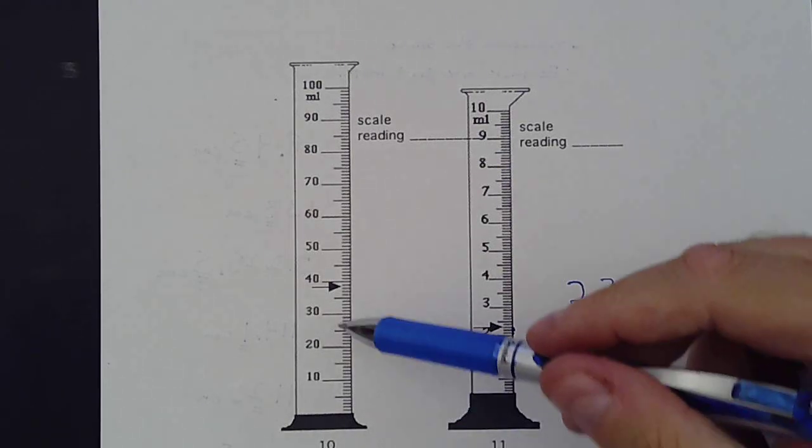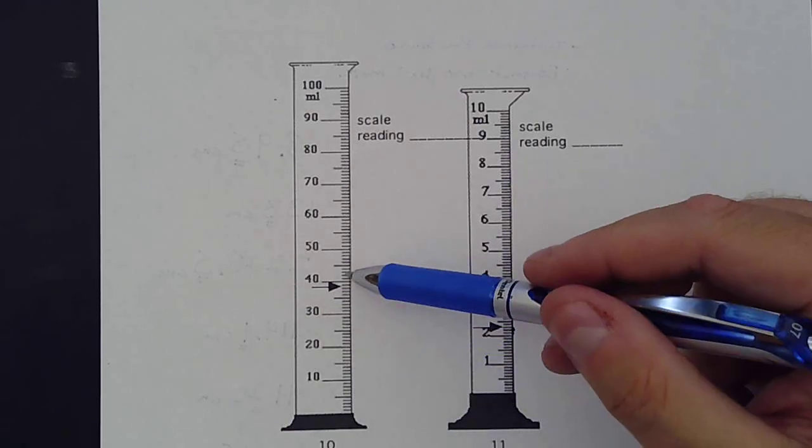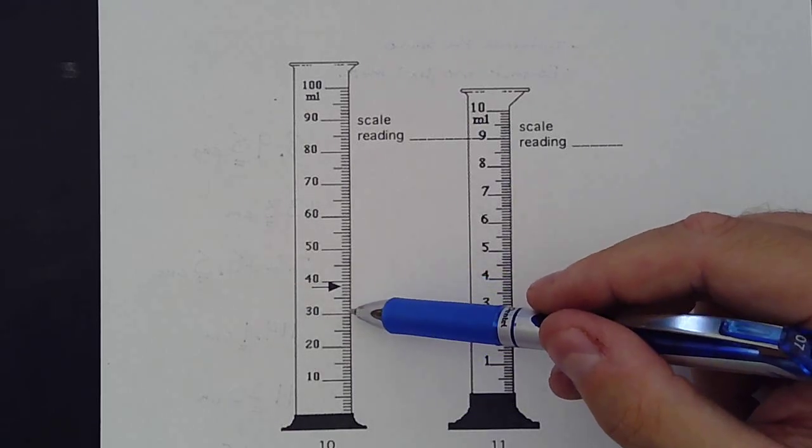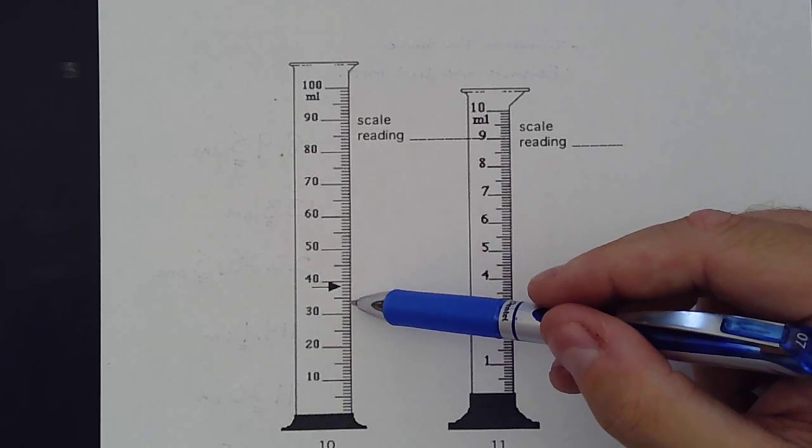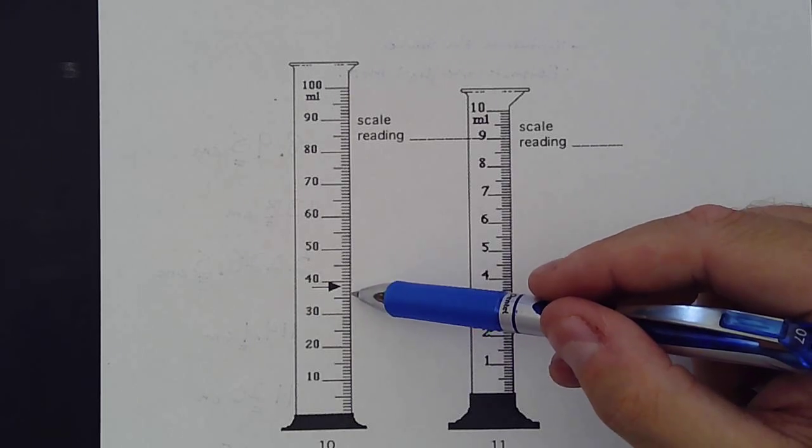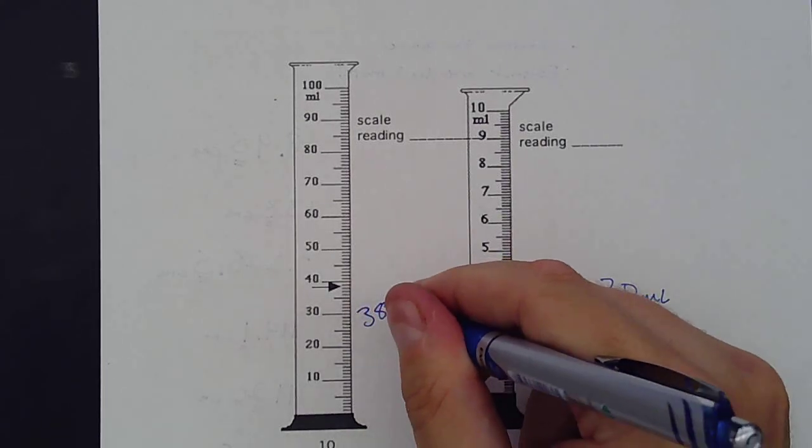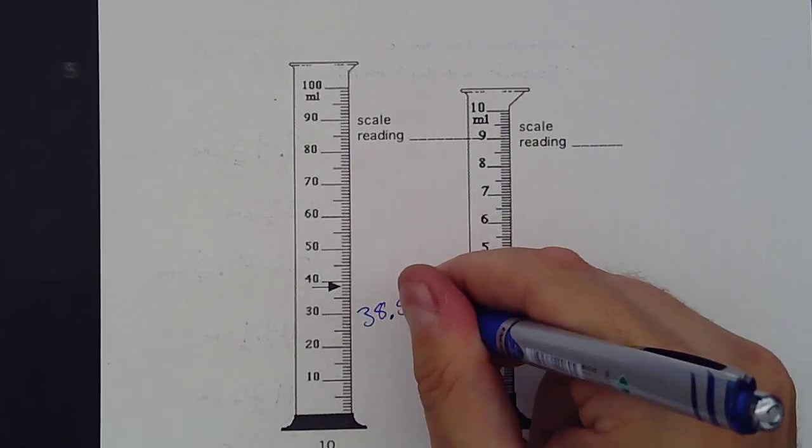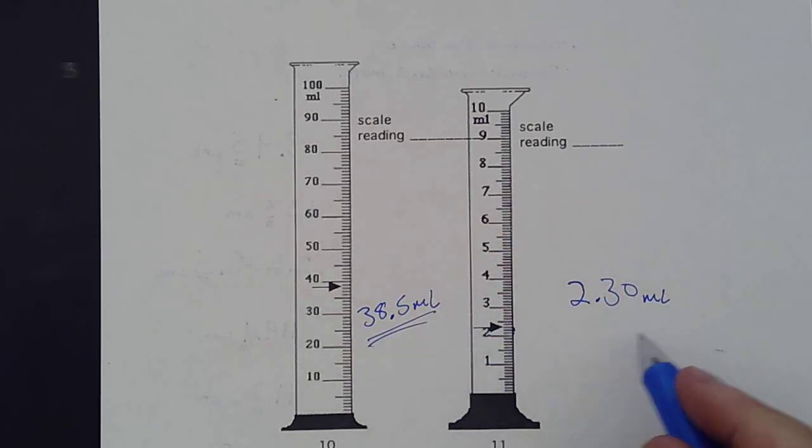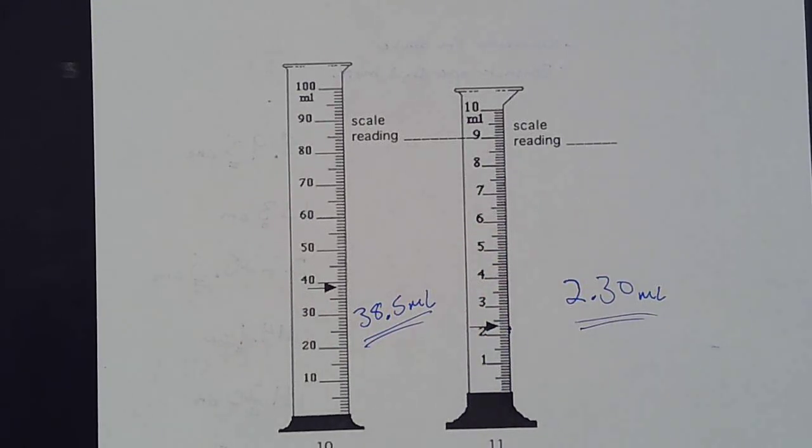And then over here, we have 10, 20, 30, and then 40. This goes up by 1s. So 31, 32, 33, 34, 35, 36, 37, 38. So I have 38. I get to estimate one more. I think it's right in the middle, so 38.5 milliliters. And those are my two estimates.